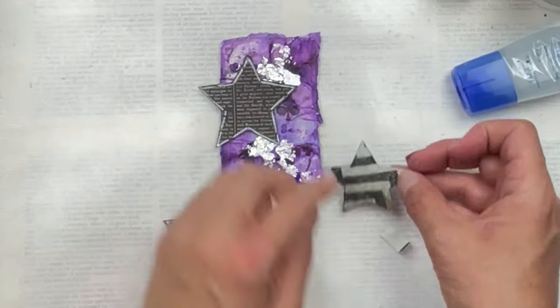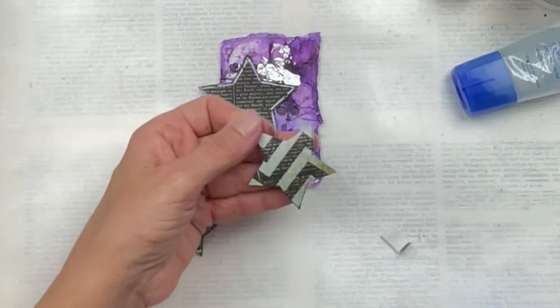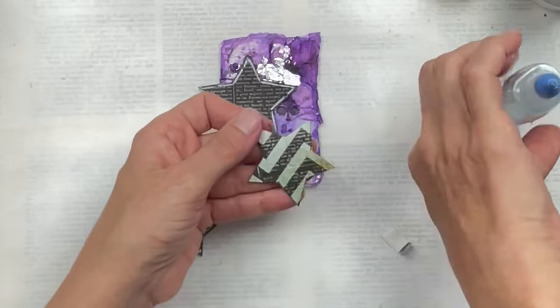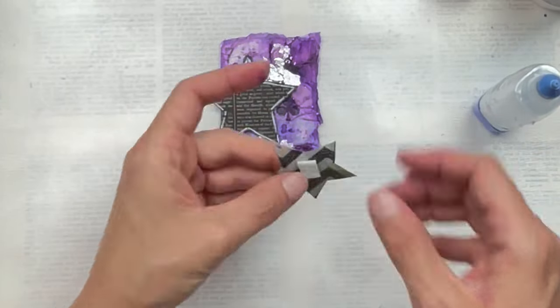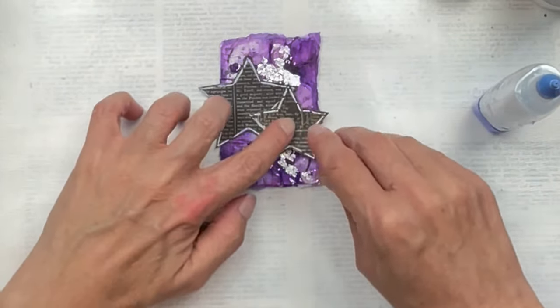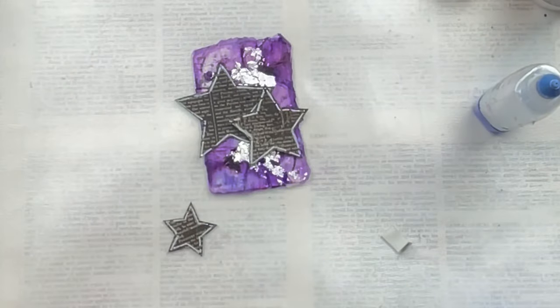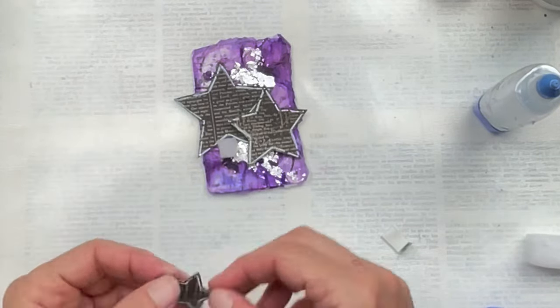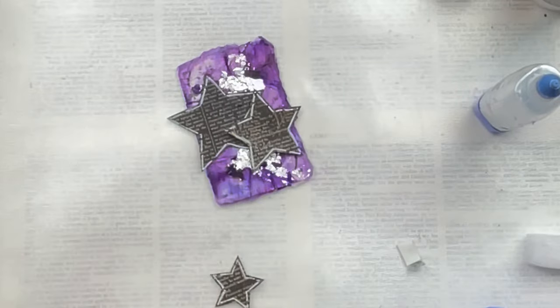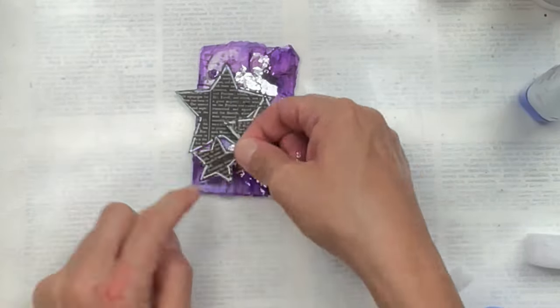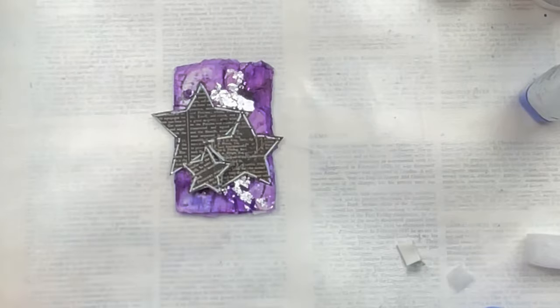I'm going to stick that down so it's slightly higher than the one in the background. For the smallest star I have a little piece of foam which I'm just going to cut and stick down in the same way. I'm now also going to add a sentiment that says 'make a wish' which I think is pretty fitting for this.